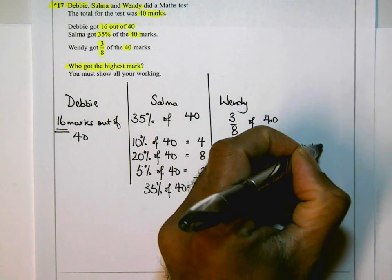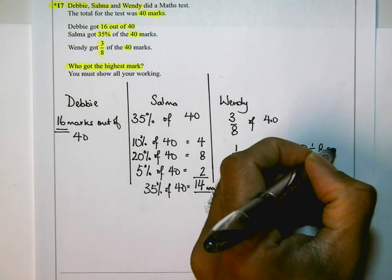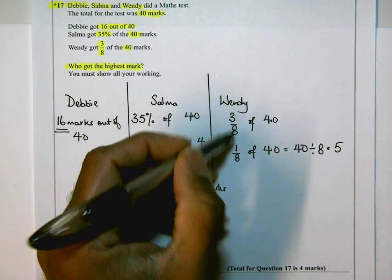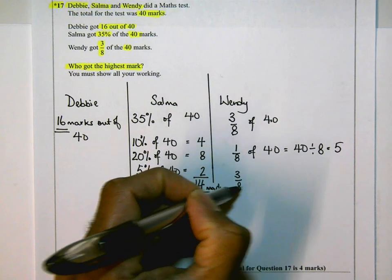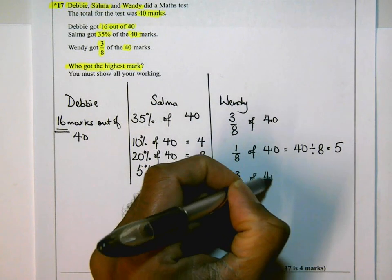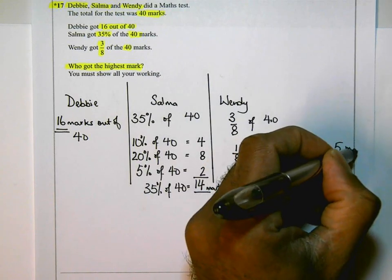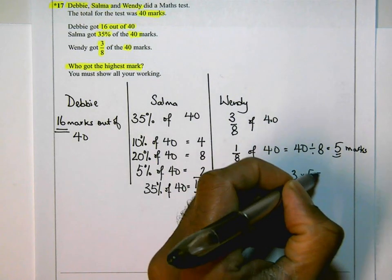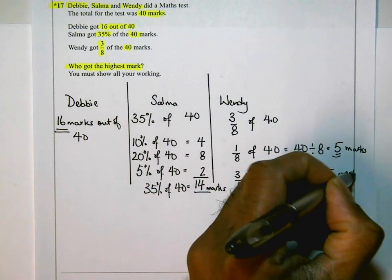So if I know that, 1/8 is therefore going to be 5 marks. But Wendy got 3/8, so 3/8 of 40. If 1/8 is 5 marks, 3/8 is going to be 3 lots of 5. 3 lots of 5 is 15 marks, so Wendy got 15.